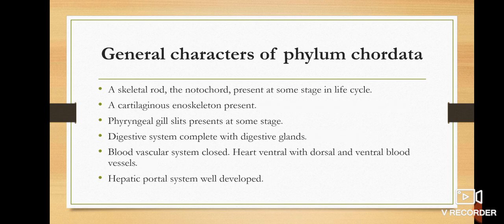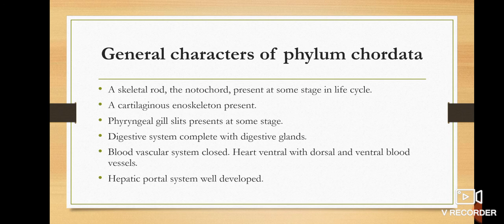Now, for the general characters of Phylum Chordata: the animals have a skeleton rod-like notochord present. I have told you that it is a fundamental character and it is present in some stages of their life. Their body also has a cartilaginous endoskeleton, which provides internal support. Pharyngeal gill slits are present in some stages of life and can be present or absent according to habitat.